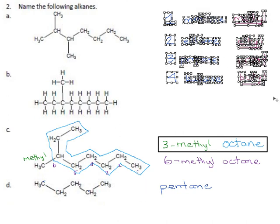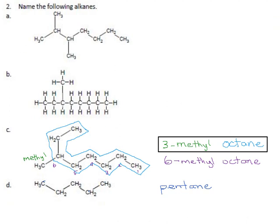Fair enough. Let's try a couple more. In B, primary chain: one, two, three, four, five, six, seven, eight. It's octane again. It's some kind of octane.